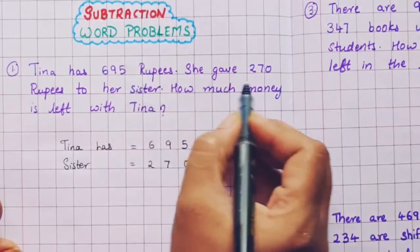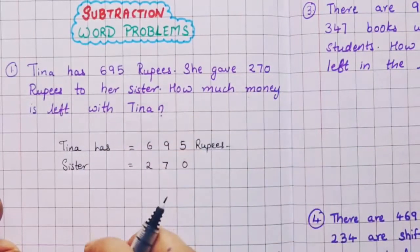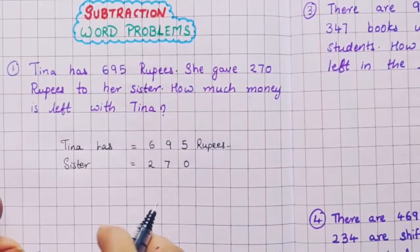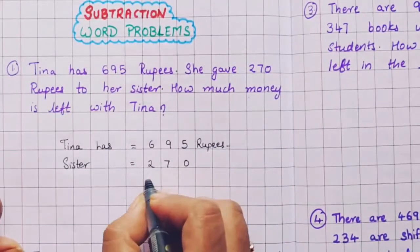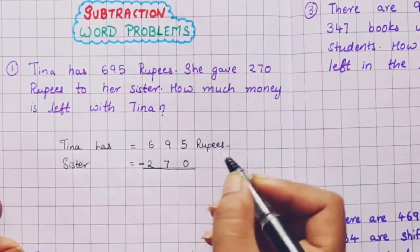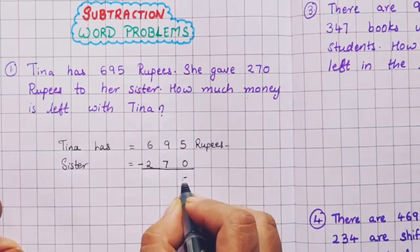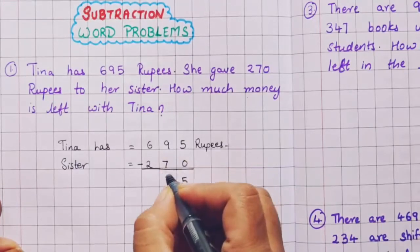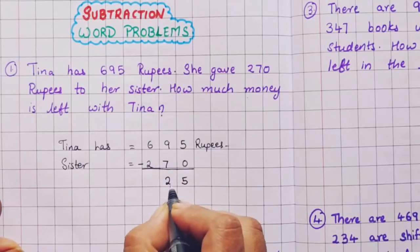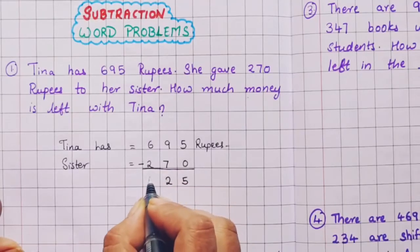First she had this much, then she gave this much. So whatever is left with her, we are going to find it out by using subtraction. Now here 5 minus 0 is 5, 9 minus 7 is 2, and 6 minus 2 is 4.